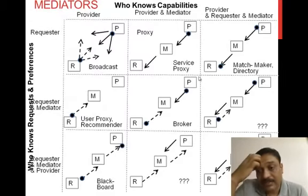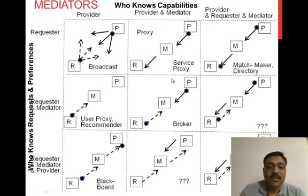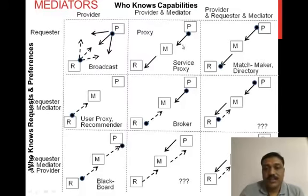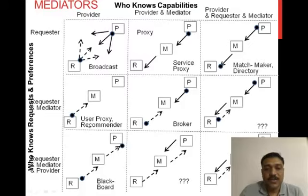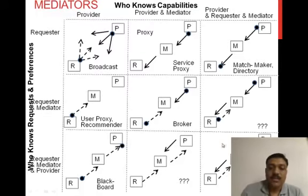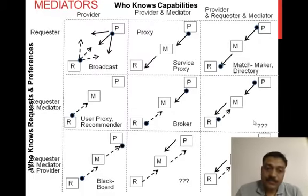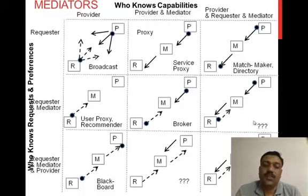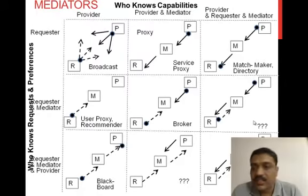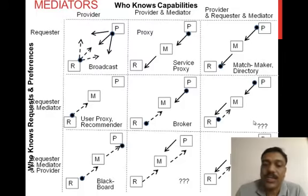You can have a matchmaker or a directory which is used when requesters and providers are advertising. A matchmaker or service proxy will act as a broker, and using that the whole communication may happen. Using a matchmaker and broker component, the requesters and providers can know the preferences and services available in the environment.